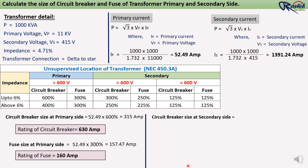Now we calculate the circuit breaker for the secondary side. Secondary current is 1391.24 A. As per the NEC standard, we multiply 125% by the secondary current. This is because, as per NEC rules, if the secondary voltage of the transformer is less than 600 volts, we use a 125% safety factor for both circuit breaker and fuse. In our example, the transformer secondary voltage is 415 volts, so this option applies.